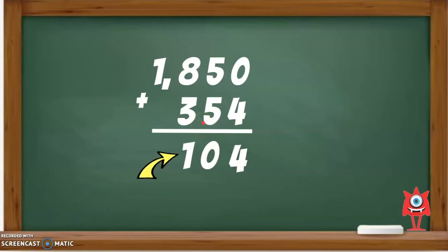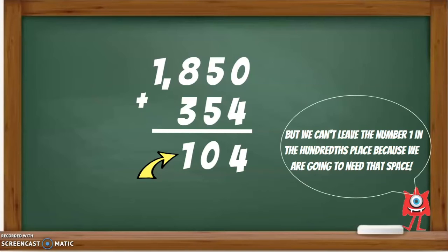So, we will need to use 2 digits in our answer to write it. But we cannot leave the number 1 in the hundreds place because we are going to need that space. When we add the hundreds place, that 1 is going to be in the way. So, what do we do?